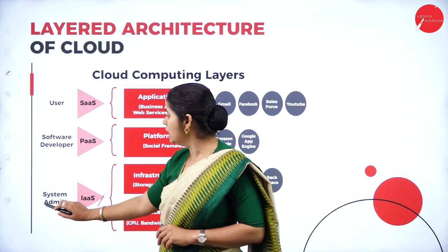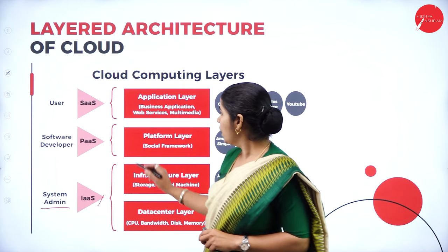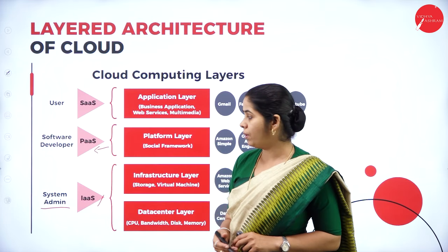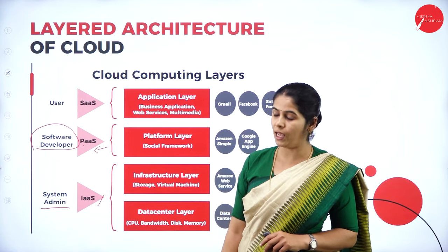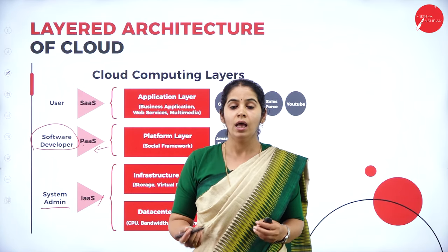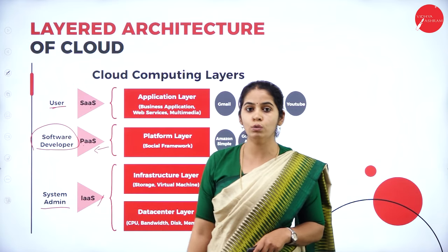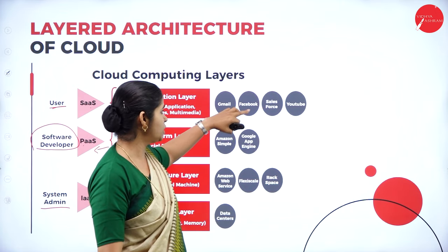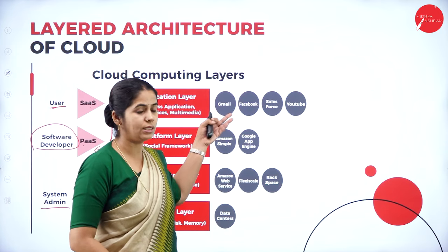The platform layer corresponds to PaaS — used by software developers. The application layer corresponds to SaaS — used by end users like us. Examples of the application layer include Gmail, Facebook, cell phones, and YouTube — everyone can access these applications. Examples of the platform layer include Amazon Simple and Google App Engine, which are platforms provided by Google and Amazon for developing applications.